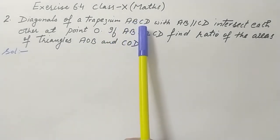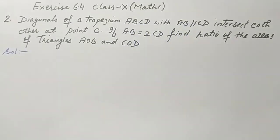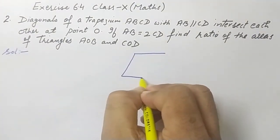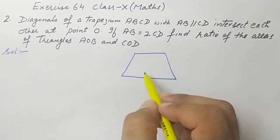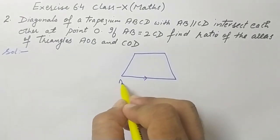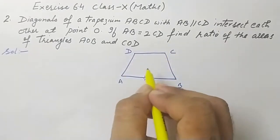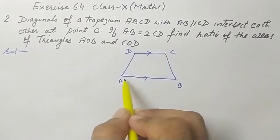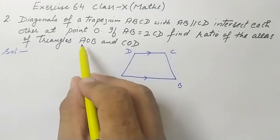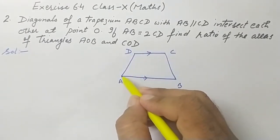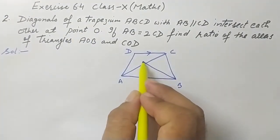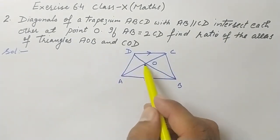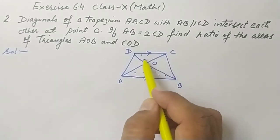In this question, trapezium ABCD is given in which AB is parallel to CD. Let's draw the figure first. A trapezium is a quadrilateral in which at least one pair of opposite sides is parallel. Here AB is parallel to CD, and AB is given as double of CD. We need to find the ratio of areas of triangles AOB and COD. When we draw the diagonals, they intersect at point O.